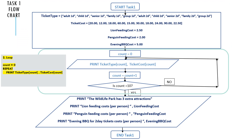The next part of task 1 is a loop to show all the elements inside ticket type and ticket cost. It's kind of like a repeat-until loop. Count equals 0, repeat, print ticket type of count, ticket cost of count, update counter so count equals count plus 1. Is the count equal to 10? Are we finished? If no, it's not equal to 10, then repeat; else we're finished.